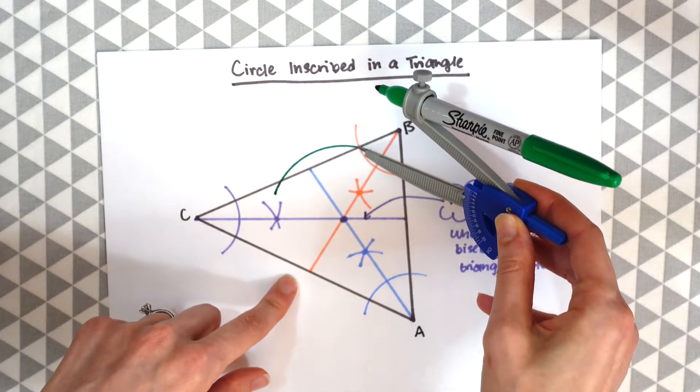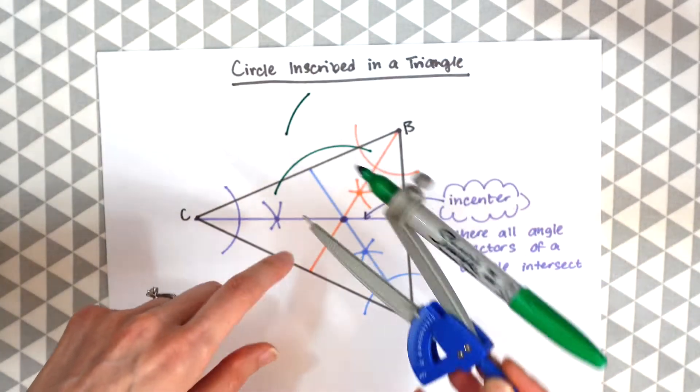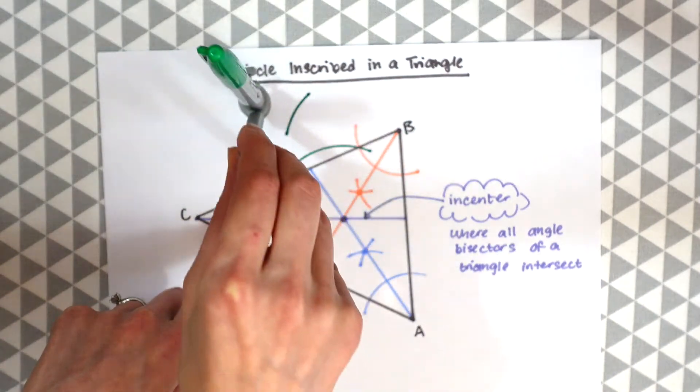We're going to take the point of the compass and bring it to one side of intersection and make another arc and then do the same thing on the other side.